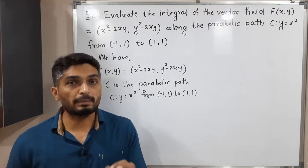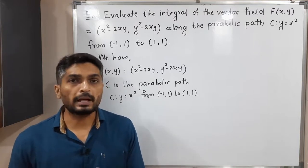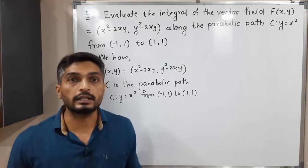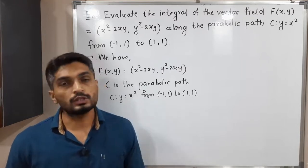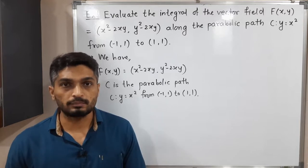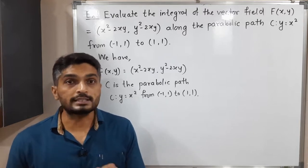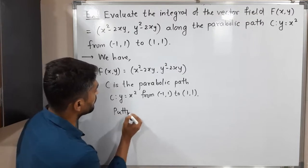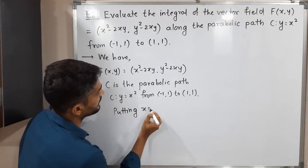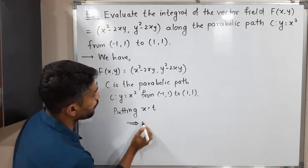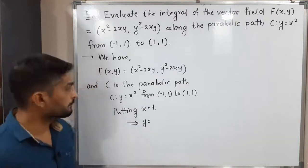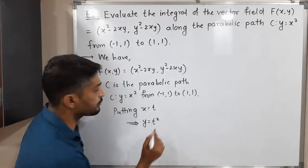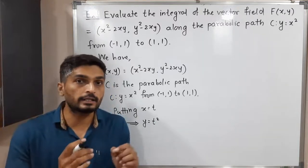We have to find the parametrization of this curve. In parametrization, what we do is try to express the entire curve in terms of one variable. Here also we will try to do the same. I am going to put x = t. So y is equal to t². In this way, we have expressed x and y in terms of t.